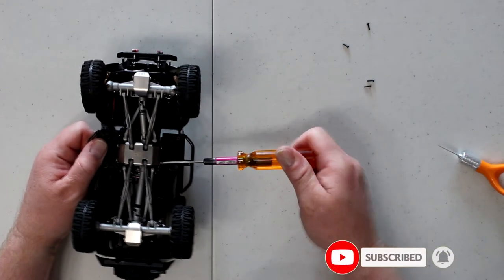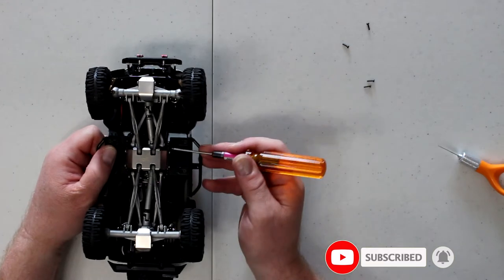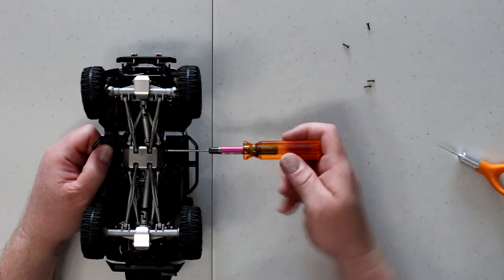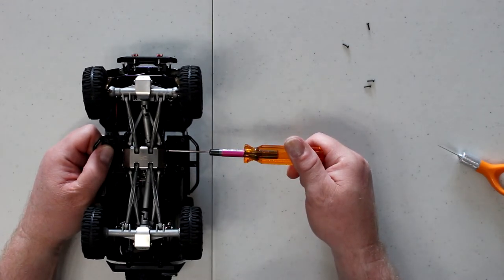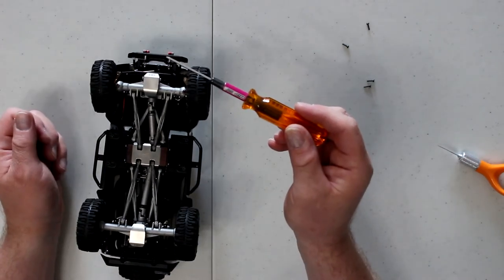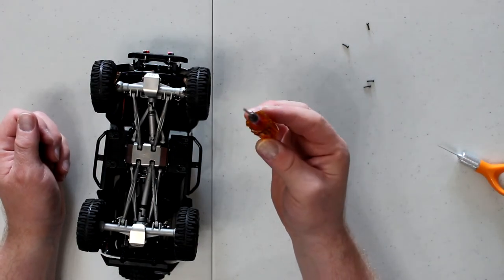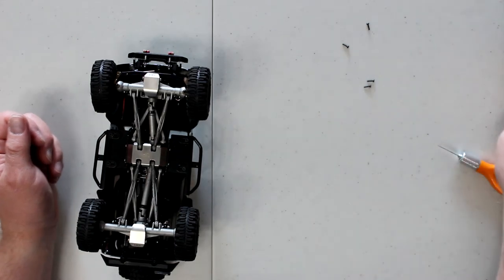Now, you could put a little bit of Loctite on these guys if you wanted to. But they're fine screws. And when you're using your 0.50, that's a small head, very easy to strip.